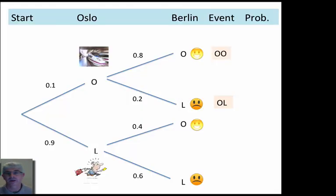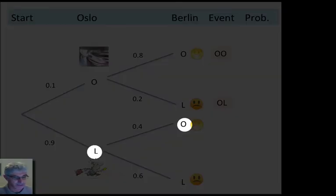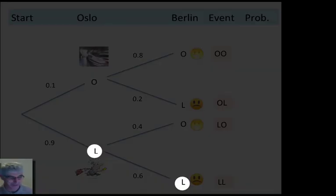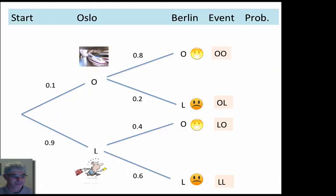The next one was on time to Gardermoen, but late to Berlin. OL. The next one, we were late to Gardermoen, but on time still to Berlin. LO. And the last one, well, that was a bit sad. We were late to both and missed the concert. So that's important. We've got the whole event now. Not just the individual outcomes, but the whole event. Because that's what's important in our experiment. We want to know that final event and look at the different probabilities of those.